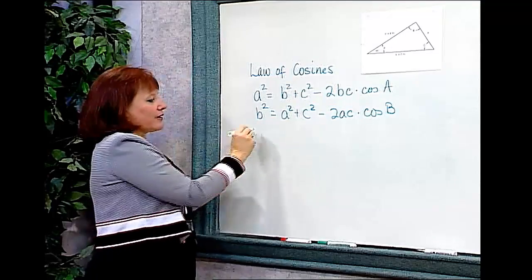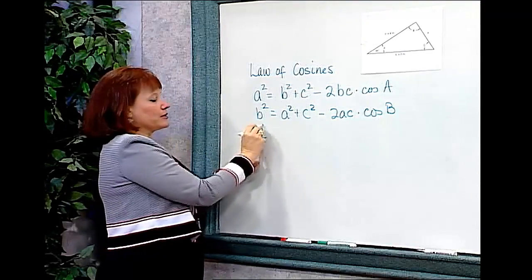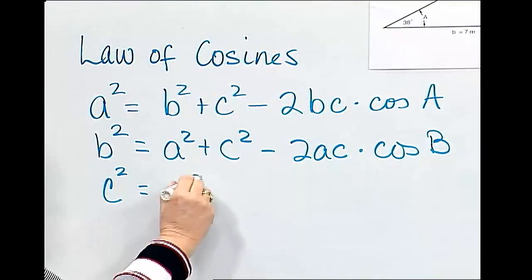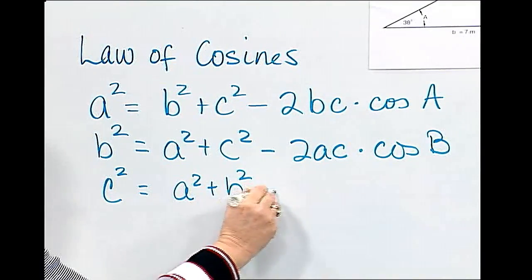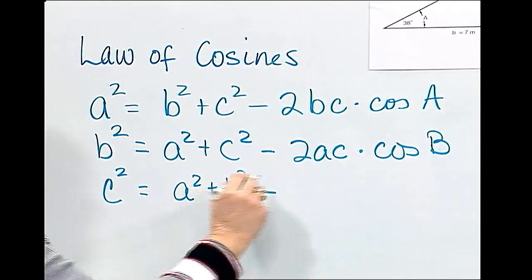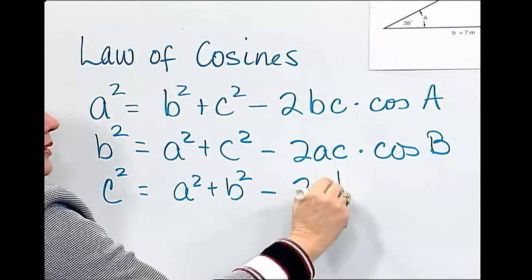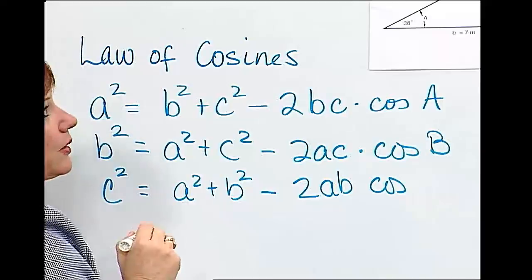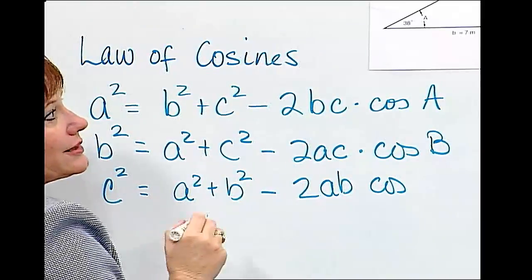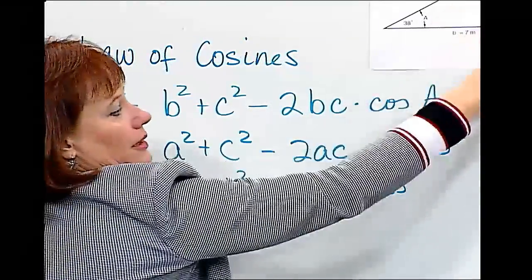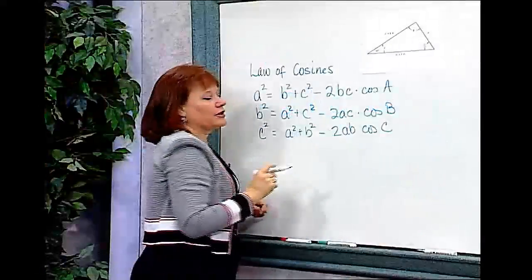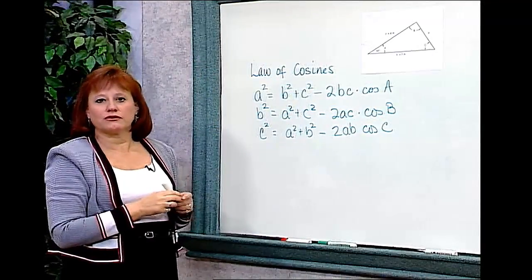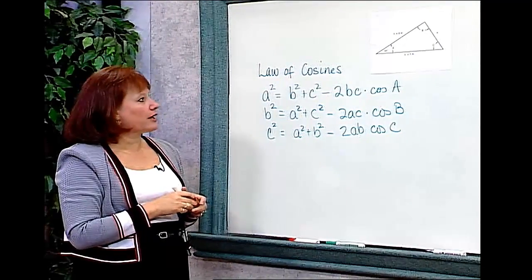And finally, if I wanted to find C, I would square it and use the two other sides: A squared plus B squared, minus 2 times their product — minus 2AB — times the cosine of the angle between them. If I look at A and B, the angle between them is angle C. So using one of these three versions of the law of cosines will help you find missing parts in an oblique triangle.